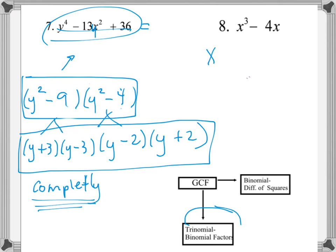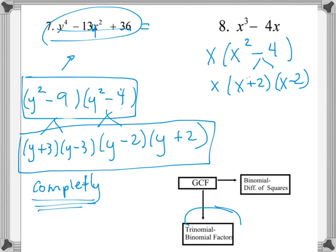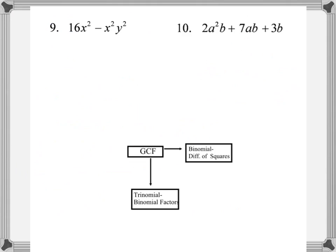For number 8, the common factor is x, so we factor out x leaving x(x² − 4). Notice that x² minus 4 is the difference of squares, so this can be factored further into x(x − 2)(x + 2). That's the answer.